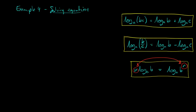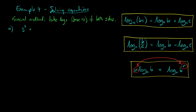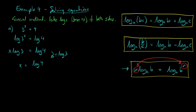Finally, example four is about solving equations. The general method is to take logs of both sides, using base 10 since that's what calculators use most easily. For 3 to the power x equals 4: taking logs of both sides and using the power rule to bring x to the front gives x log 3 equals log 4. Dividing by log 3 gives x equals log 4 divided by log 3, which is 1.26 to 3 significant figures. Note: be careful with brackets on your calculator, and this is not the same as log of 4 over 3.